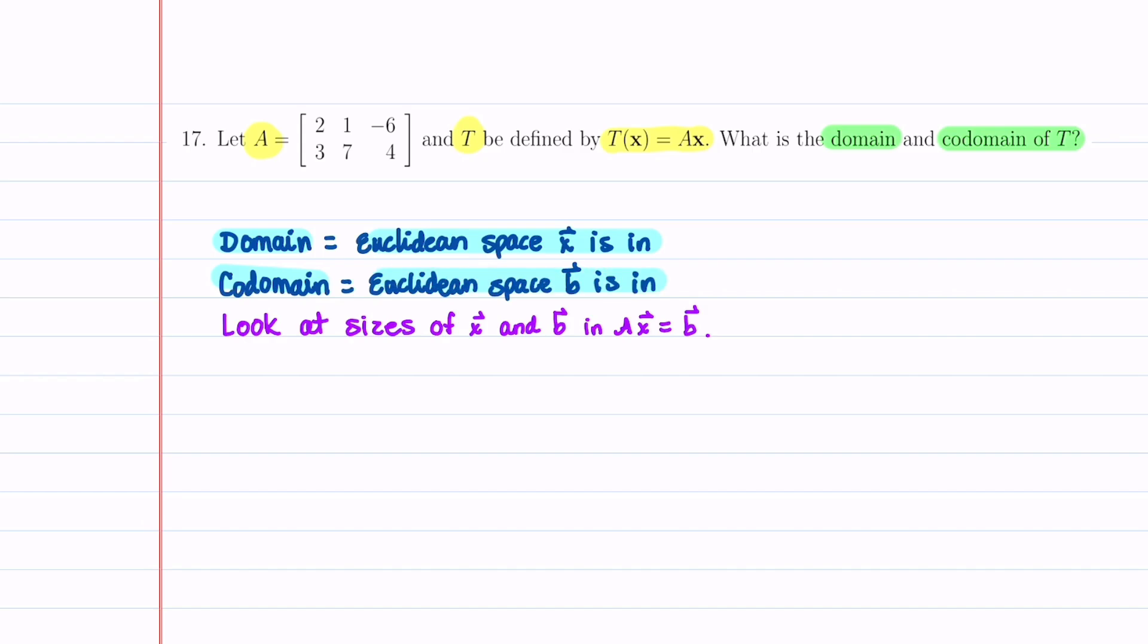In order to find out what the domain and the codomain is, what we're going to do is look at the sizes of X and B in the equation A times X is equal to B.